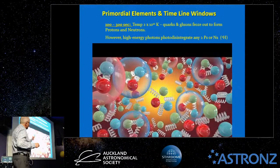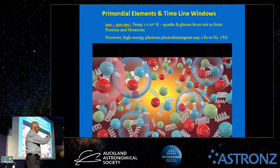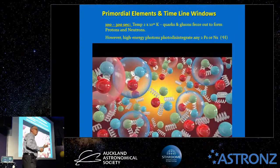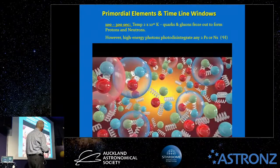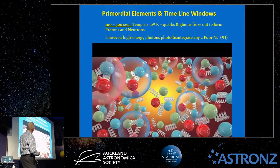However, even though protons and neutrons had formed by this stage, they still could not combine to form atomic nuclei because of photodisintegration. High-energy photons were so energetic that whenever two protons or a proton and neutron tried to hook up, a photon would come along and rip them apart. This process of photodisintegration continued through the first 100 to 300 seconds.